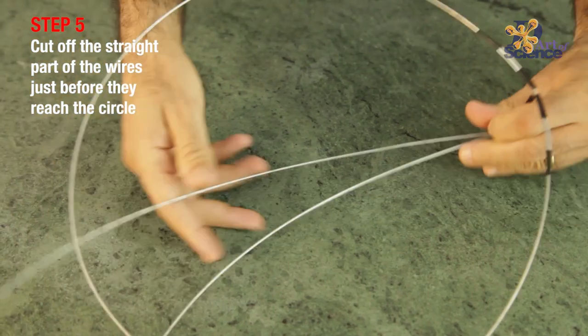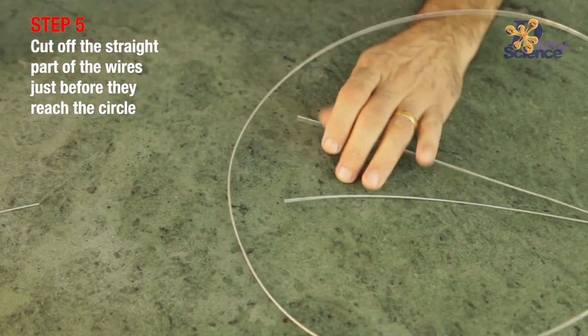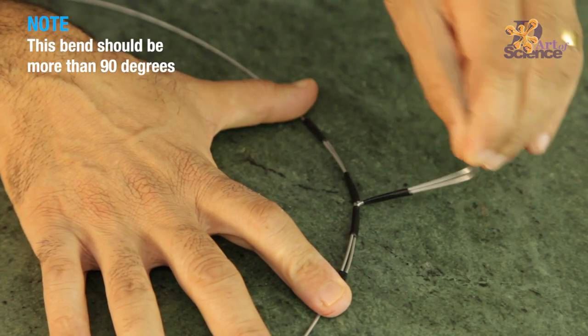You can cut off the straight wires before they reach the circle. This bend should not be 90 degrees, but it needs to be more than 90.